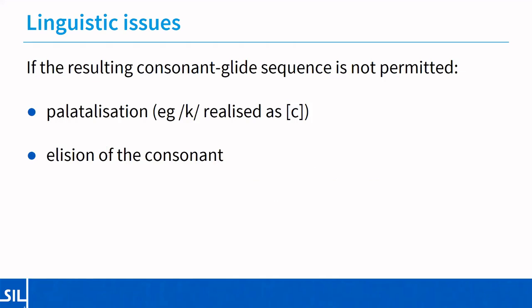By palatalization I mean the realization of the underlying consonant as a palatal consonant — for example, the velar stop k realized as the palatal stop ch. I'm going to avoid using the term 'palatalized consonant,' which is often used for consonants with secondary palatal articulation, because it could get confusing if we use the same terminology for two different things. Those will be referred to as consonant-glide sequences instead, and that term will also cover consonants with secondary labial articulation; the context should make it clear whether the glide is palatal or labial.